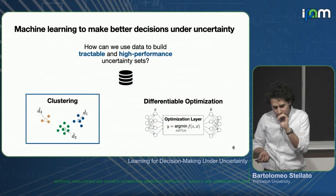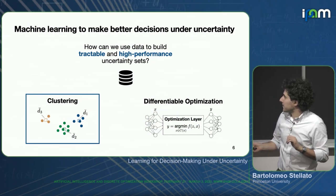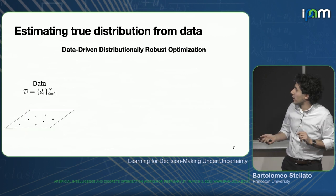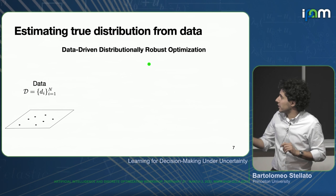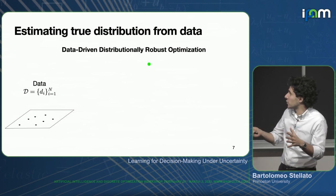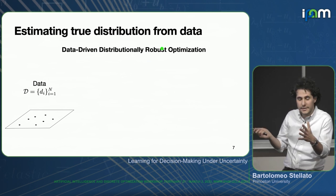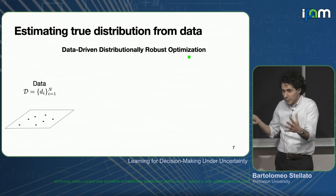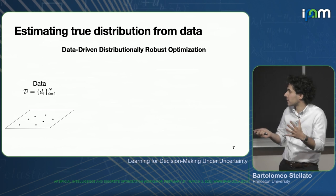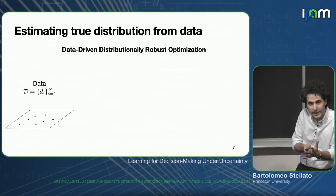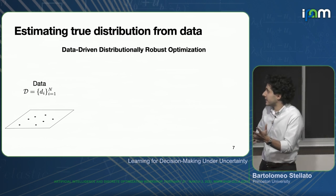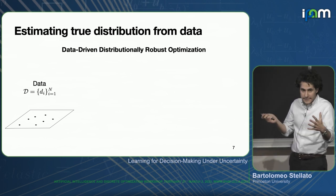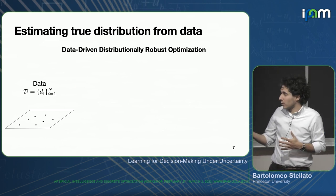Before jumping into clustering, and actually related to the previous question, I would like to introduce the concept of data-driven distributionally robust optimization — a topic that gained lots of popularity recently. It works using data and builds uncertainty sets, also called ambiguity sets, in the following way. We start from certain data points, build an empirical probability distribution using these data points, and then these approaches build an ambiguity set.